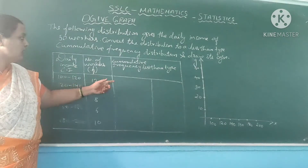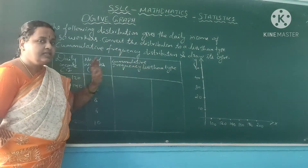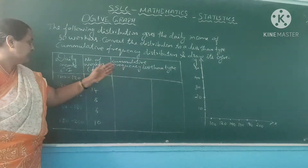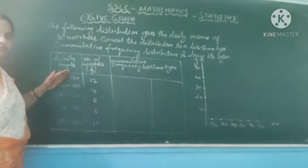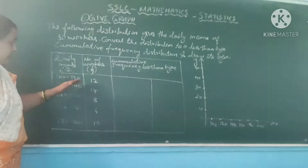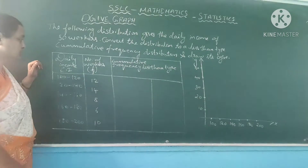Is it clear? For less than walker graph, what limit should I consider? The upper limit. So here the column entries will be: less than 120, less than 140, less than 160, less than 180, less than 200.